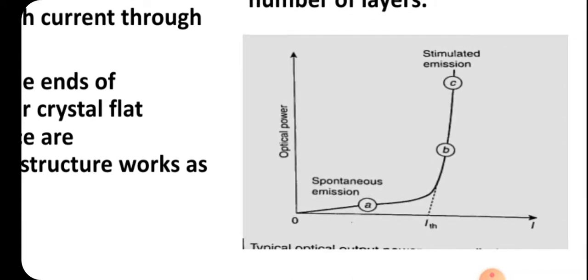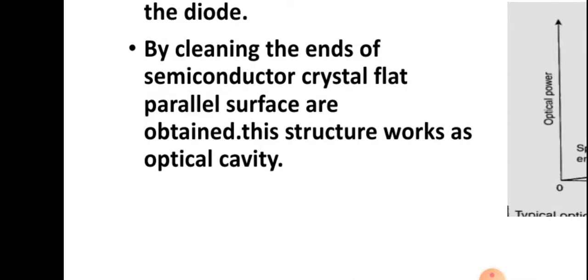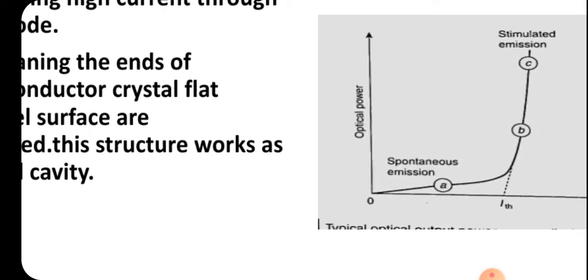The current is plotted against the optical power. Up to the threshold value of current, spontaneous emission occurs — that means LED action. The structure works as an LED, meaning spontaneous emission will occur and light will be produced. After the threshold value of current I-th, more carriers undergo population inversion so that stimulated emission occurs, corresponding to laser action. So in region A it works as an LED, and in regions B and C it works as a laser.